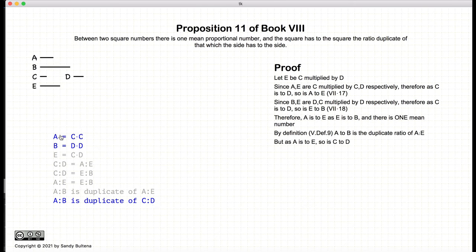And thus, we have demonstrated that we started with two square numbers, a to b. We have found one and only one number that is the mean. And a to b is the duplicate ratio of c to d. And thus, we have demonstrated this proposition.